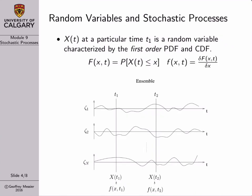You'll recall from our random variable discussion that we dropped the functional notation for the random variable very early on — we just wrote it as a single capital letter. We do something similar for a stochastic process: we drop the dependence on the experimental outcome, but we continue to use notation indicating it's a function of time. So the notation we'll use for stochastic processes in this course will be a capital letter that's a function of time — X(t) is our stochastic process.